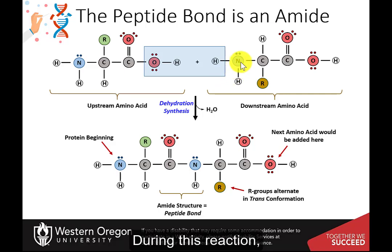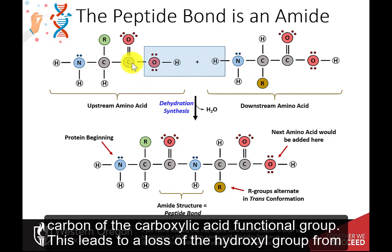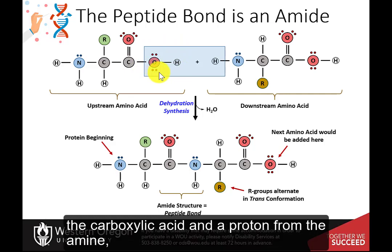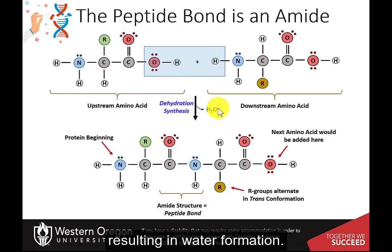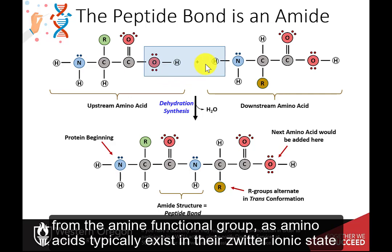During this reaction, the amine nitrogen from the downstream amino acid mediates attack on the carbonyl carbon of the carboxylic acid functional group. This leads to the loss of the hydroxyl group from the carboxylic acid and a proton from the amine, resulting in water formation. In reality, the oxygen comes from the carboxylic acid and two hydrogens from the amine functional group, as amino acids typically exist in their zwitterionic state at cellular pH.